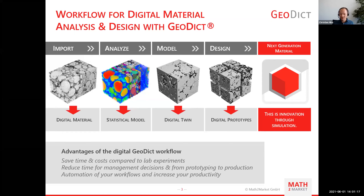Using the modeling tools in GeoDict you can alter your microstructure to improve these properties and come close to your desired properties. This way you can design several digital prototypes and start manufacturing the most promising ones in your lab, which significantly accelerates your way to next-generation materials.